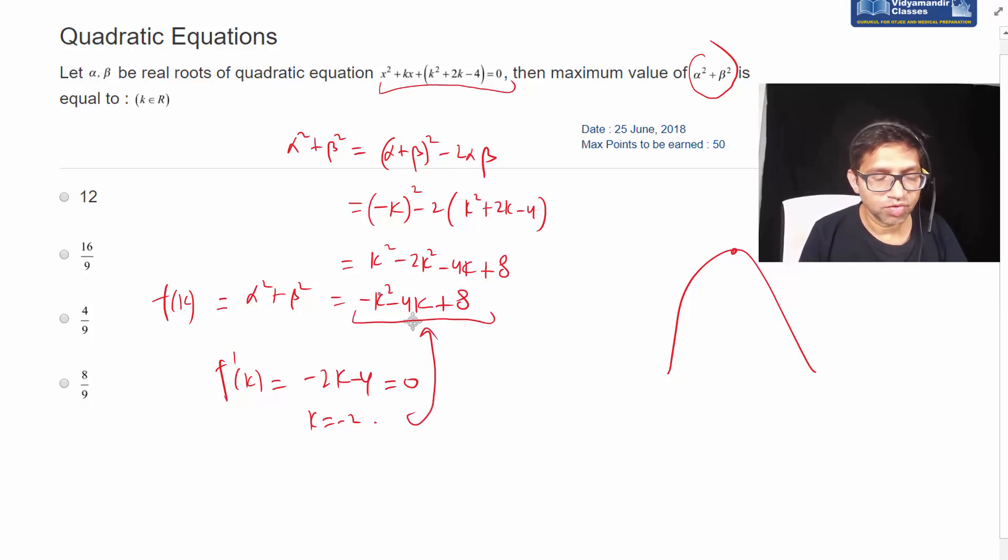Minus 2 squared is 4, so it's minus 4 plus 8 plus 8, so 16 minus 4, it is 12.